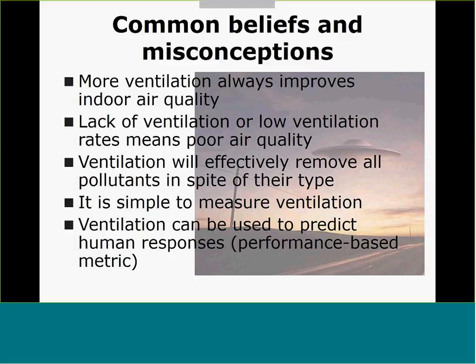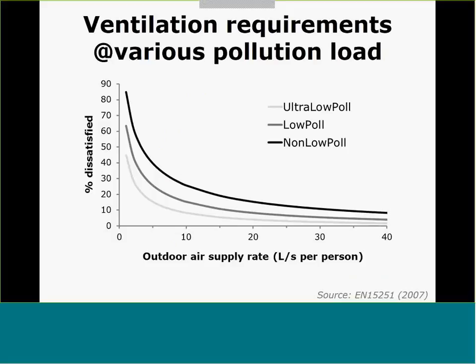Of course, ventilation can be used to predict human responses, so it is a performance-based metric. But it's probably not always the case because of those problems. One example from the European standard EN 15251 defines three levels of pollution loads in buildings. For the three levels of pollution loads, if we take a ventilation rate of 10, the percentage of people satisfied with the air quality will be different. So for the same ventilation rate, we will have two different levels of air quality. It cannot be uniformly used because there is another dimension that needs to be tackled.